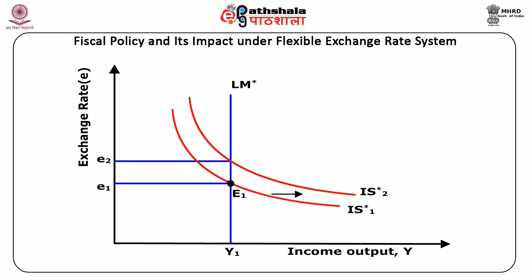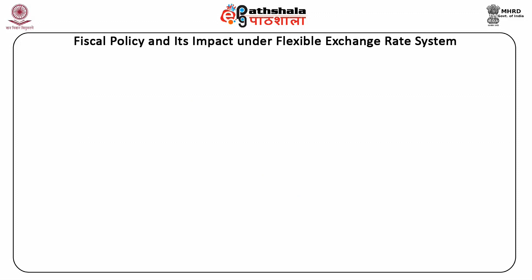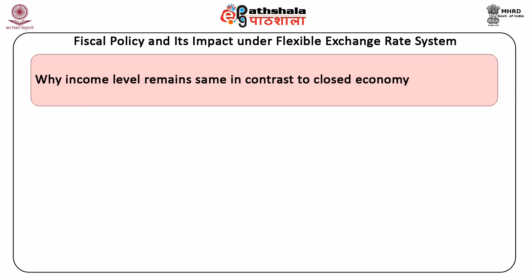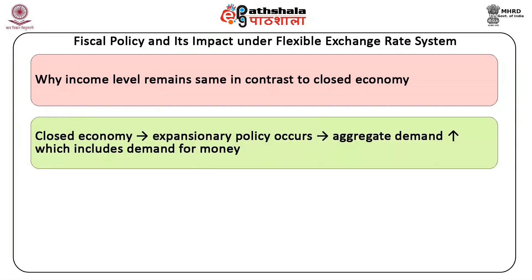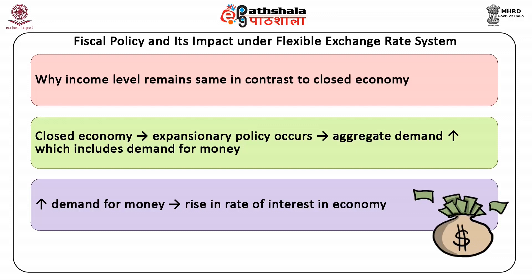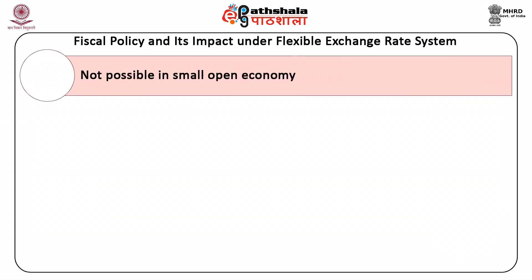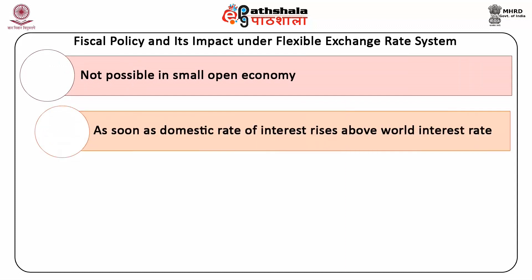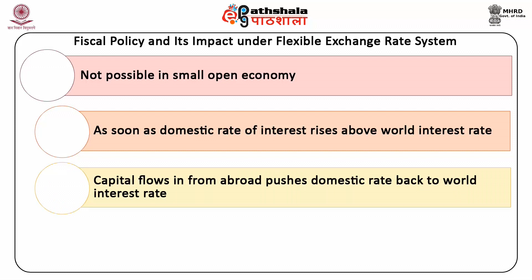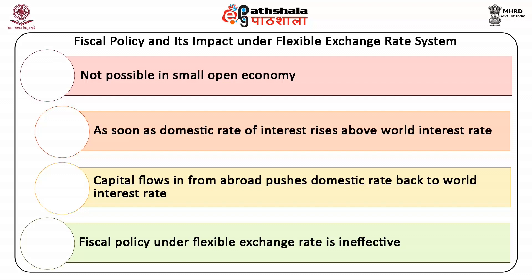The new equilibrium occurs at point E2. At this point, the exchange rate increases from E1 to E2; however, the level of income remains at Y1. An important question emerges: why does the income level remain the same, in contrast to the closed economy? In a closed economy, expansionary policy increases aggregate demand including demand for money, raising the rate of interest. But this is not possible in a small open economy, because as soon as the domestic rate of interest rises above the world interest rate, capital flows in from abroad, pushing the domestic rate back to the world interest rate. Hence, fiscal policy under flexible exchange rate is ineffective.